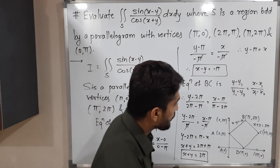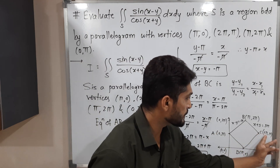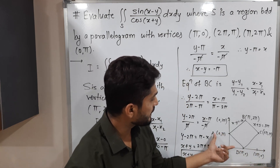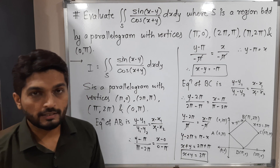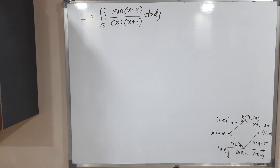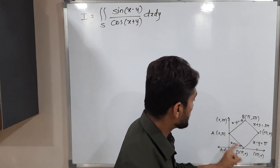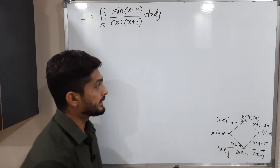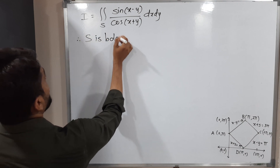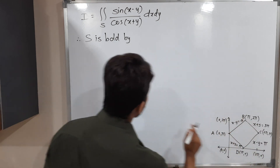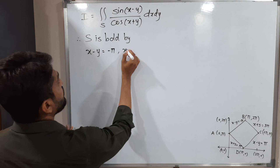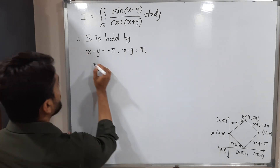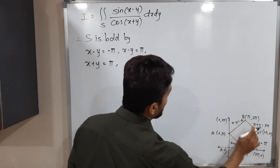In the same way we can find equations of CD and AD. Therefore, S is bounded by four lines: x minus y equals minus pi, x minus y equals pi, x plus y equals pi, and x plus y equals 3pi.